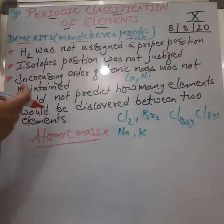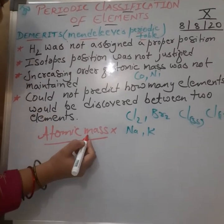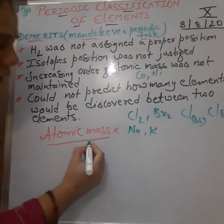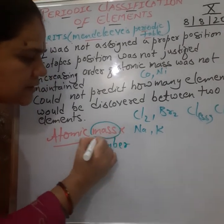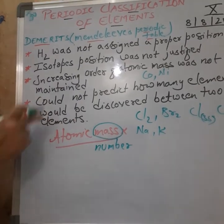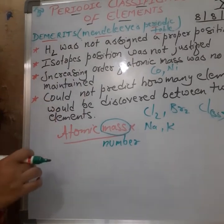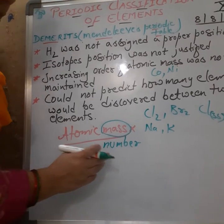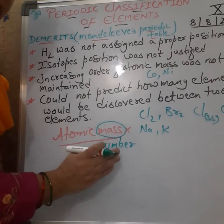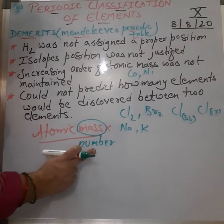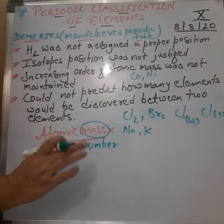When scientists started doing research, they came to a conclusion that if atomic mass is replaced by atomic number, most of the anomalies of Mendeleev's table could be solved. So a new law was proposed wherein the properties of elements are the periodic function of atomic number — and this was the modern periodic law.